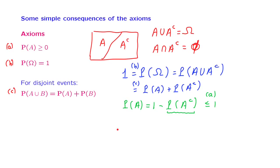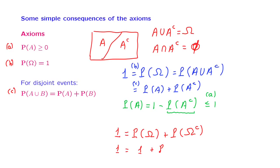Finally, note that 1 is the probability of a set plus the probability of its complement. Let us use this property for the case where the set of interest is the entire sample space. The probability of the entire sample space is itself equal to 1. The complement of the entire sample space consists of all elements that do not belong to the sample space, but since the sample space contains all possible elements, its complement is just the empty set. From this, we get that the probability of the empty set is equal to 0.